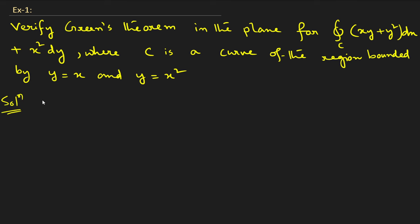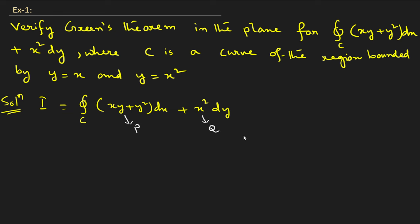What is the integration here? The closed integral over C of (xy + y²) dx + x² dy. This means xy + y² is our P, so it is P dx, and x² is our Q, giving P dx + Q dy. Green's theorem states that the closed integral over C of P dx + Q dy equals the double integral over R of (∂Q/∂x − ∂P/∂y) dx dy. We find the left hand side separately, then the right hand side. If both are equal, Green's theorem is verified.